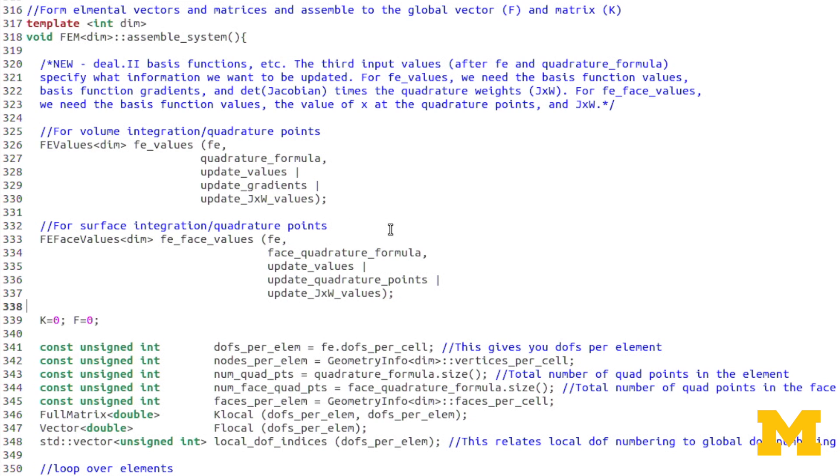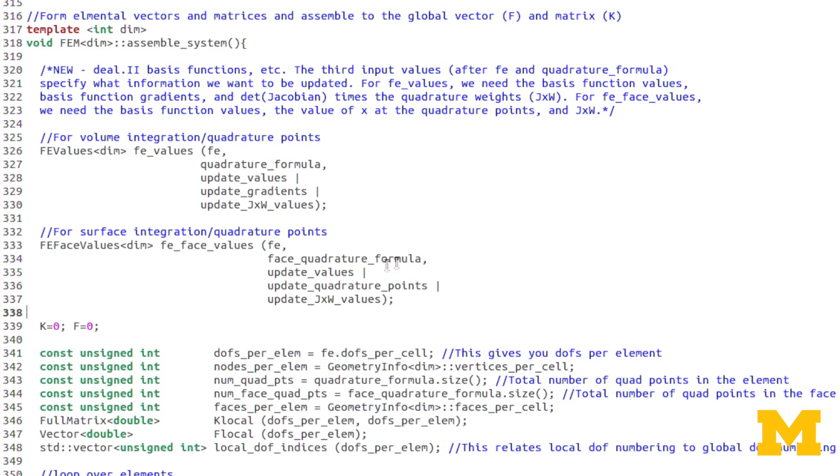The values and the gradients we would use, well the gradients we use in K local, the values we would use in F local if we had a body force. And of course J times W we would use in any volume integral. If we move on to FE face values, you'll see I'm updating values, quadrature points and J times W values. J times W values is as before, only now you'll notice since it's a surface integral, it'll be the determinant of the Jacobian mapping from the 2D by unit domain to the 2D surface domain.